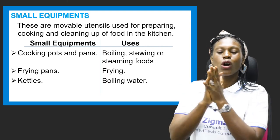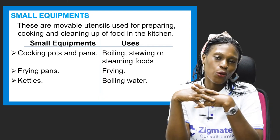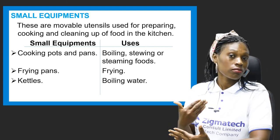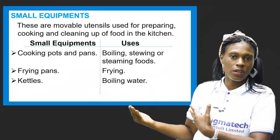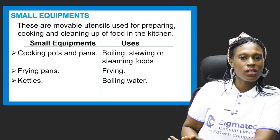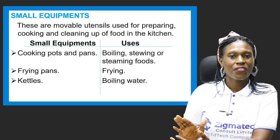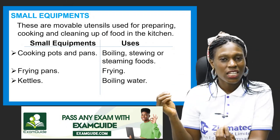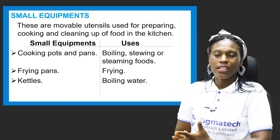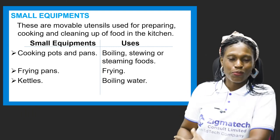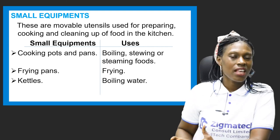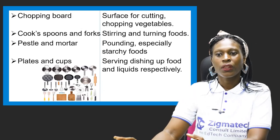The first small kitchen tool is cooking pots and pans, which we find in our homes. Cooking pots and pans are used for boiling, stewing, or steaming food. We also have frying pans, used for frying — your eggs, chips, whatever you want to fry. And we have the kettle, used basically for boiling water. These are movable tools found in almost every kitchen.